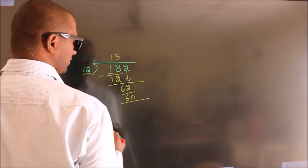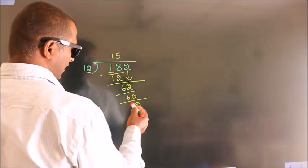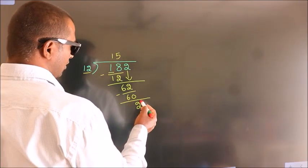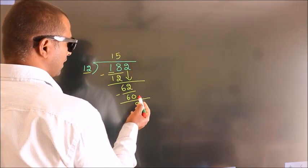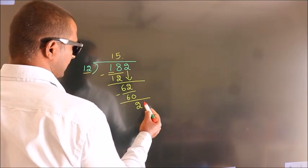Now we subtract. We get 2. After this, no more numbers to bring down. So what we do is put a dot and take 0.